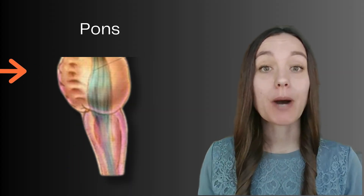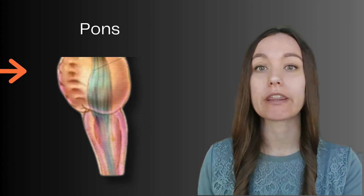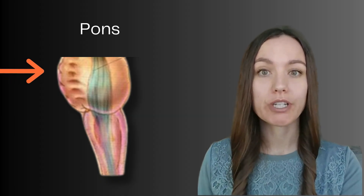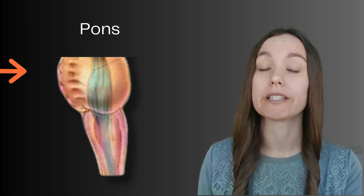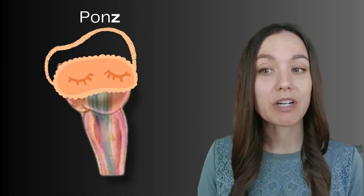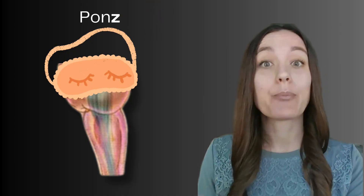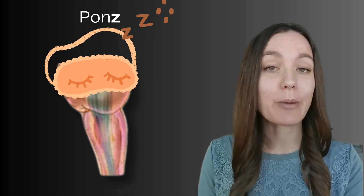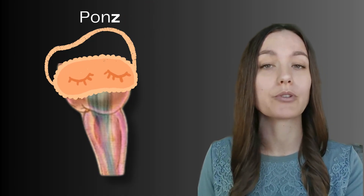Next is the pons, located in the upper part of the brainstem just above the medulla. You can see it pictured here in that orangish color, wrapped around the upper portion of the reticular formation. The pons has several different functions, but I typically encourage students to remember it for its role in sleep and dreaming. To remember this function, I think of the word 'pons' followed by several z's — because z's represent sleep in cartoons. So when you see or say the word 'pons,' focus on that ending — pons-zzz — and it will help you remember that the pons is responsible for sleep and dreaming.